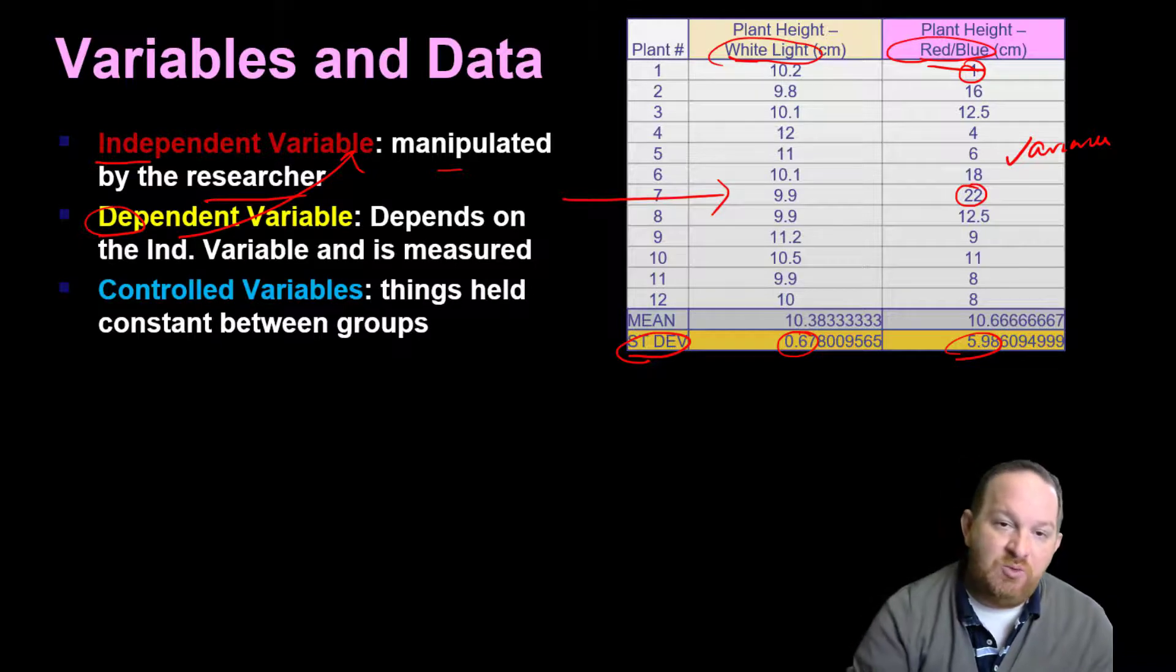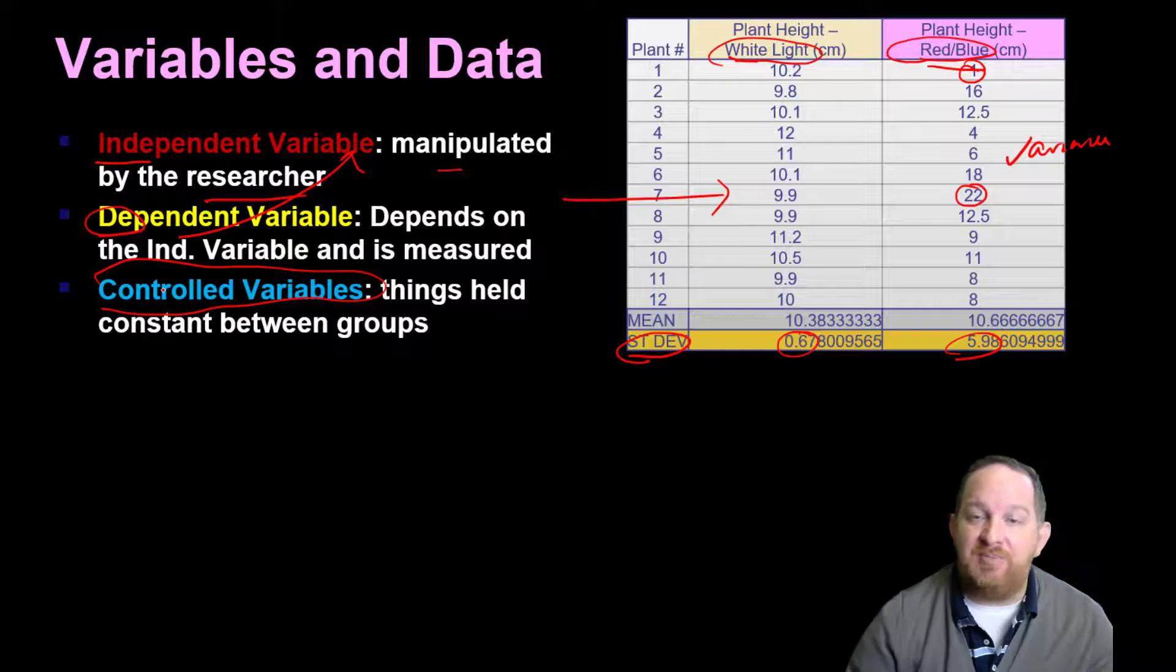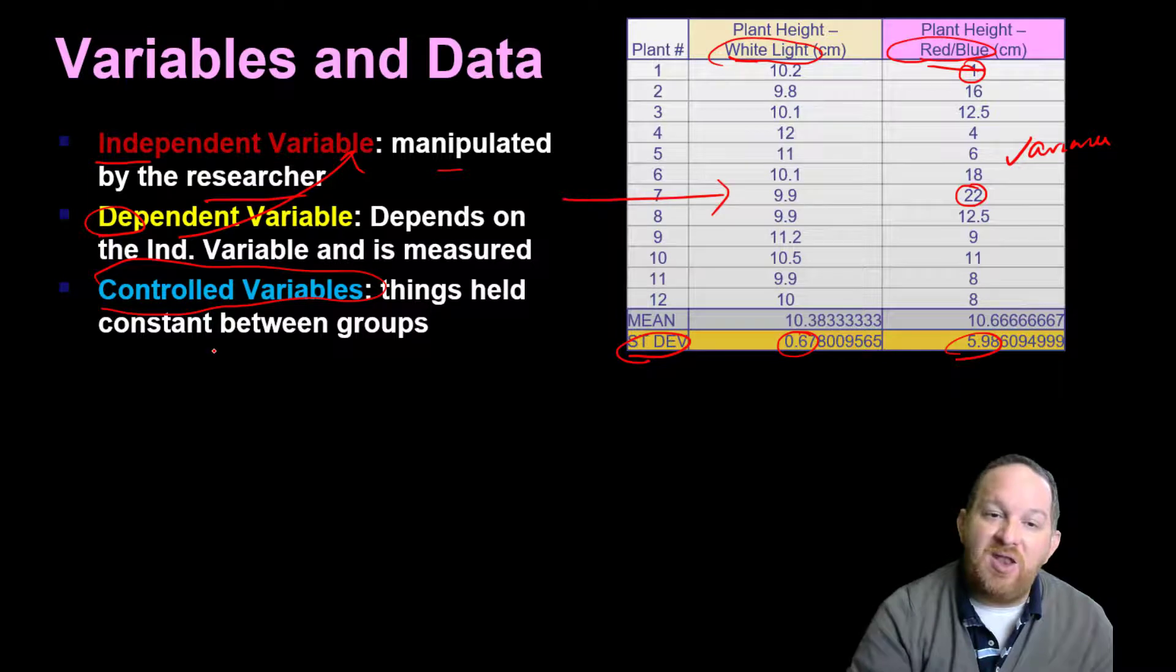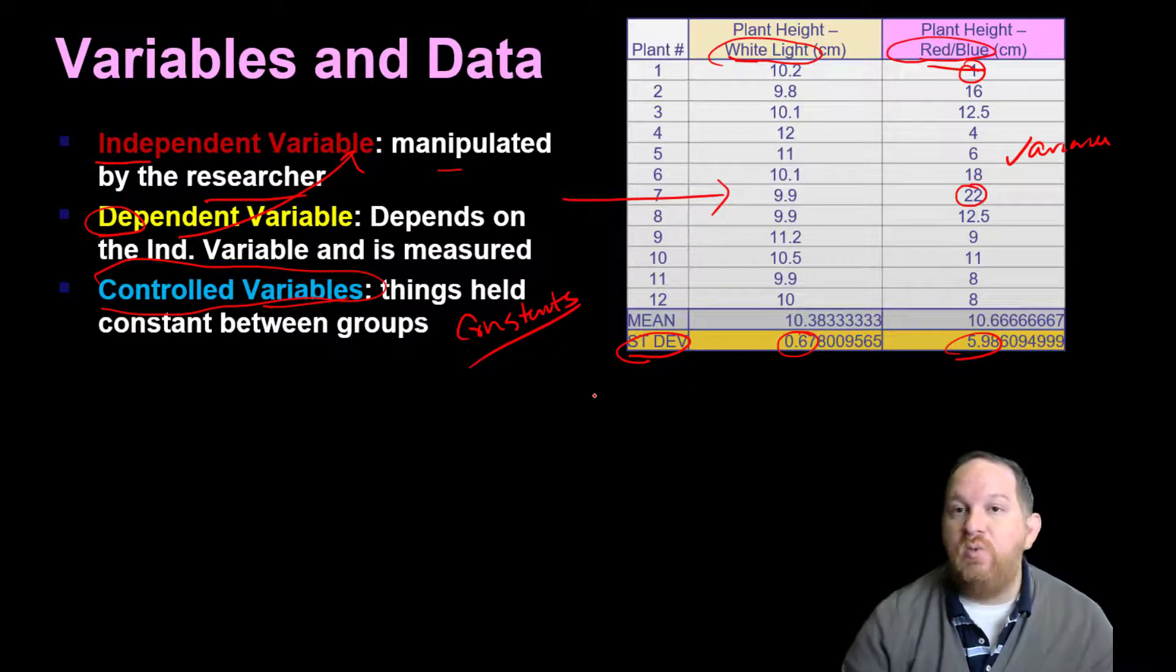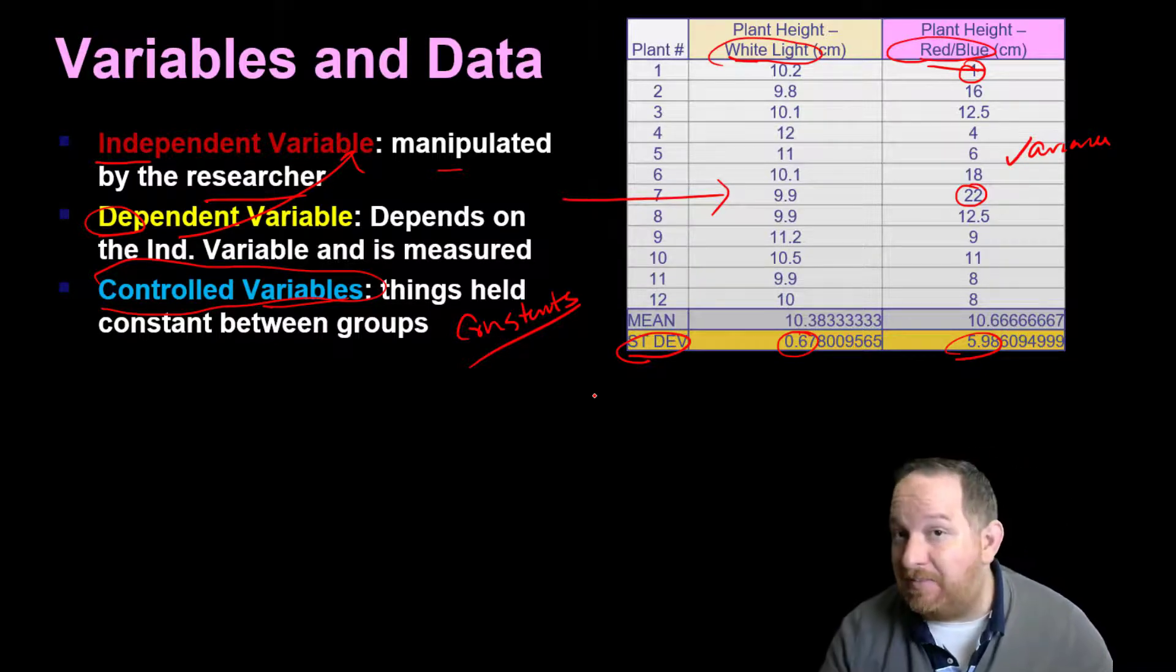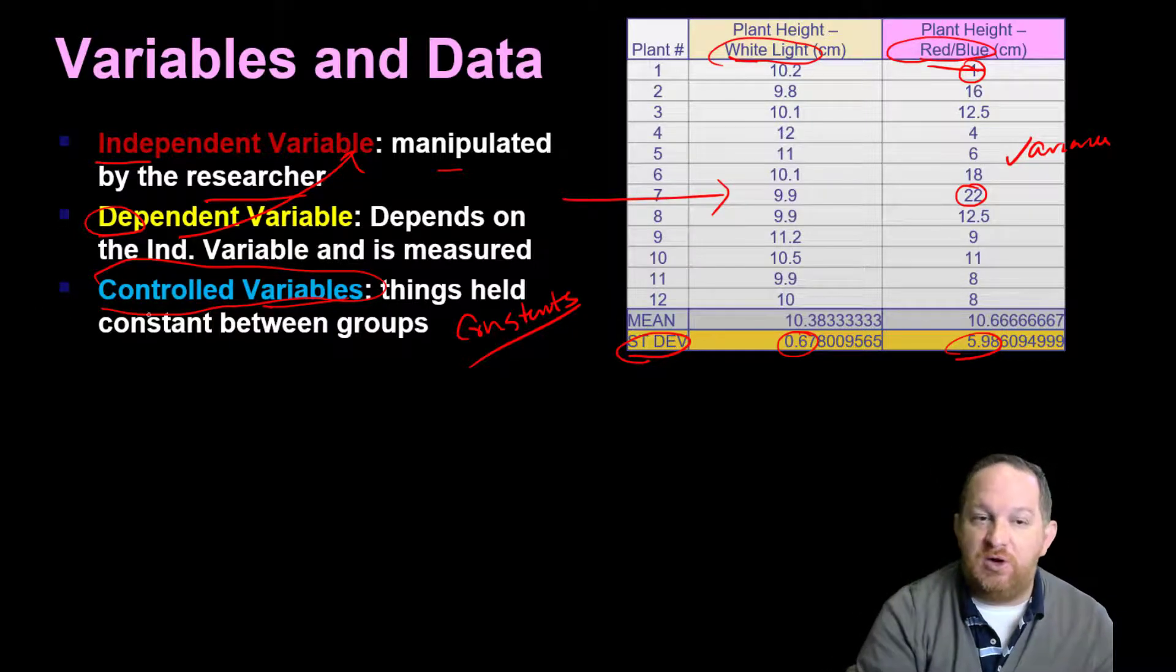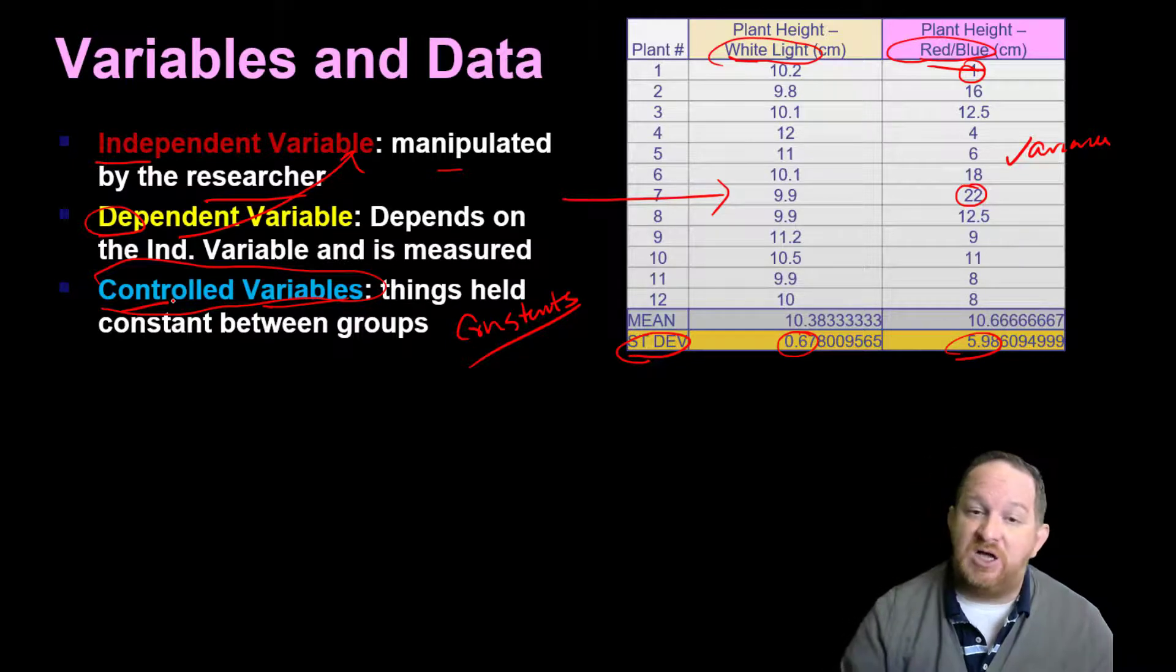Then I want to be really specific here. There are things called controlled variables. Now I'm not talking about the experimental control, just using the white light. That was our control. But variables that we keep constant or control. Some people might call these the constant variables. What are your constants? So we watered them the same amount. That's a controlled variable. We left the light on for the same time. We had them in the same location in the room. It was the same temperature. All of those are variables we control. So good experiments will control for these constants or variables.